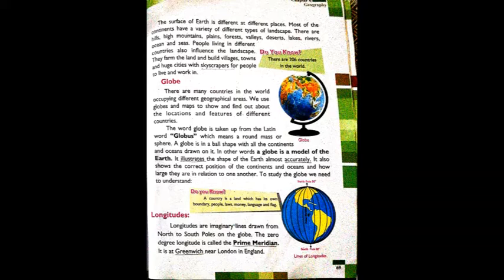There are hills, high mountains, plains, forests, valleys, deserts, lakes, rivers, oceans and seas. The earth's surface is different at every location. Most continents have a variety of landscapes - some areas have hills, some have high mountains, some have plains, some have dense forests, some have valleys, and some have deserts, lakes and rivers. People living in different countries also influence the landscape - they farm the land and build villages, towns and huge cities with skyscrapers for people to live and work.